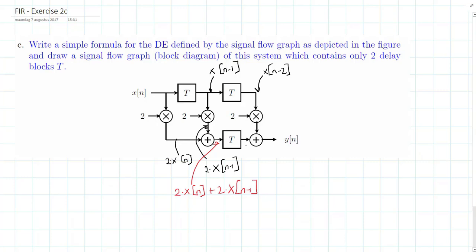These are delayed once more, so what we will get is 2 times x[n] plus 2 times x[n-2].